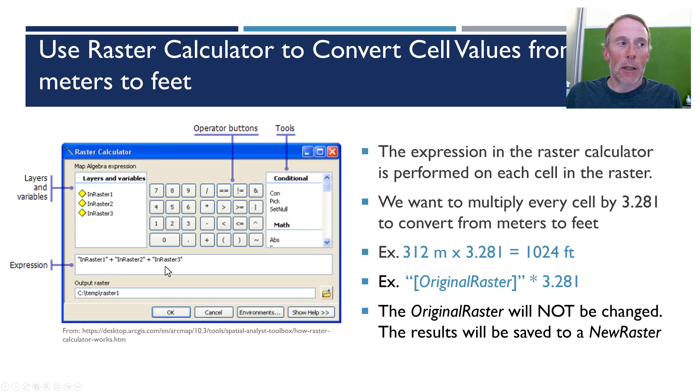First we're going to enter an expression. The expression is just the mathematical formula that we're going to use to change the value of each cell in the raster. In this case we want to multiply every cell by 3.281 which is how you convert meters to feet. There are 3.281 feet in every meter.